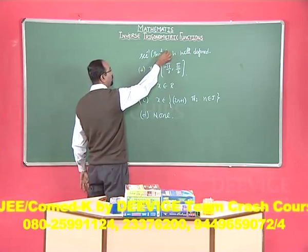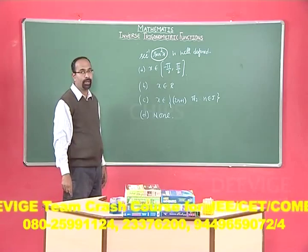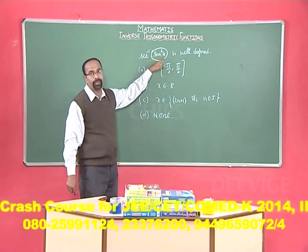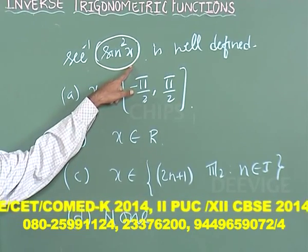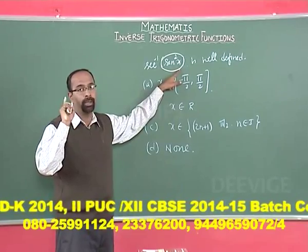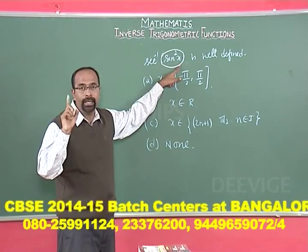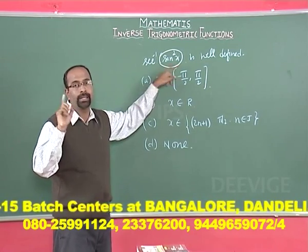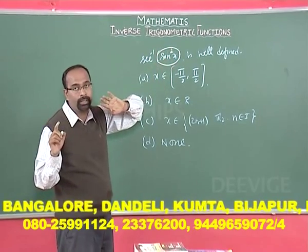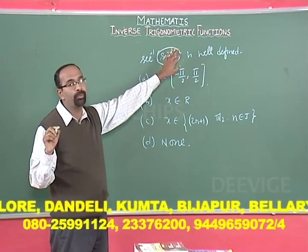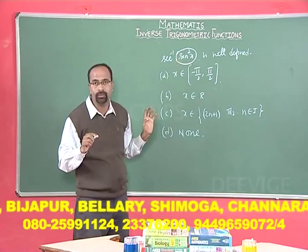The maximum value of sin²x is 1. Now, sec⁻¹(x) is defined only if x ≥ 1 or x ≤ −1. The condition x ≤ −1 will never come into picture here, because sin²x can never become less than or equal to −1 — its least value is 0.